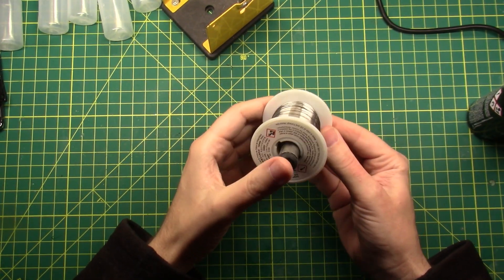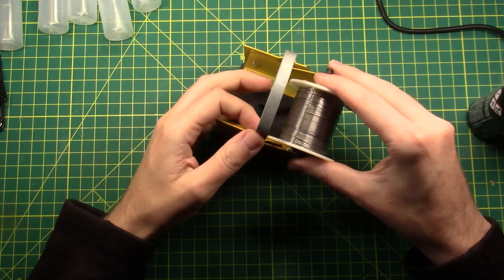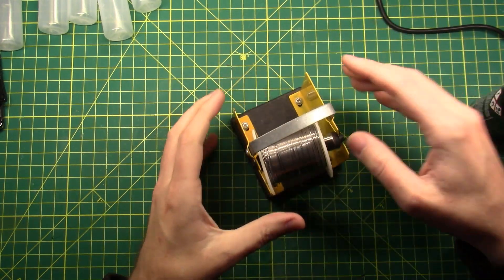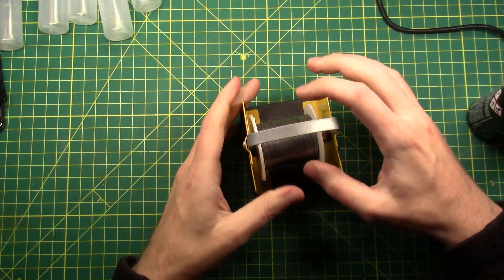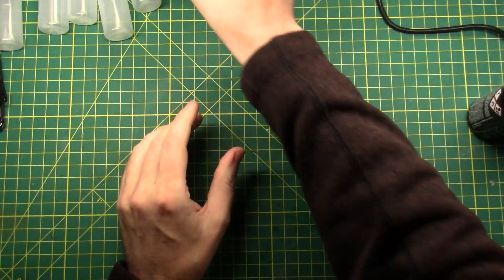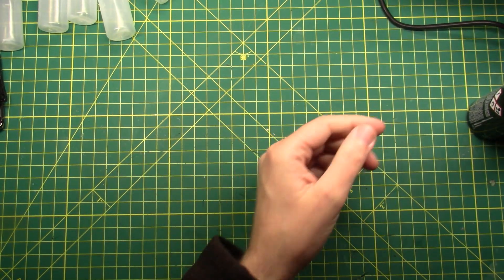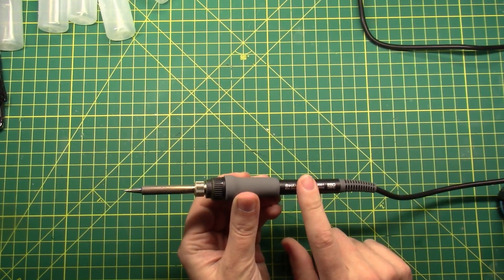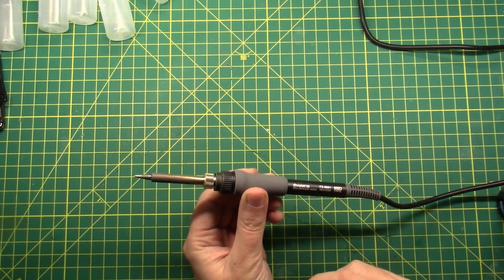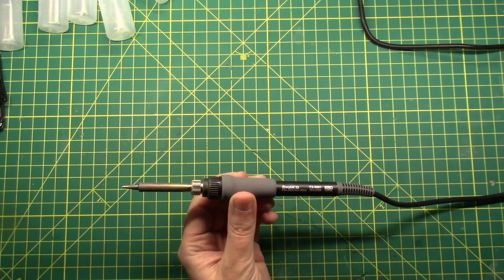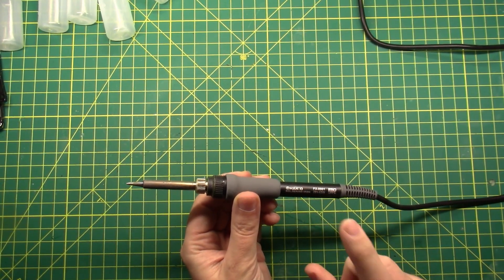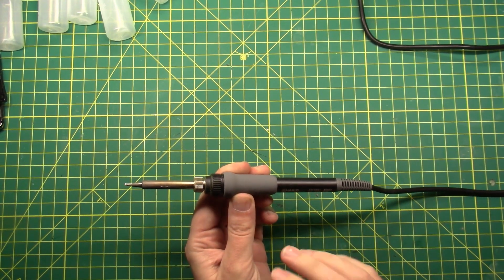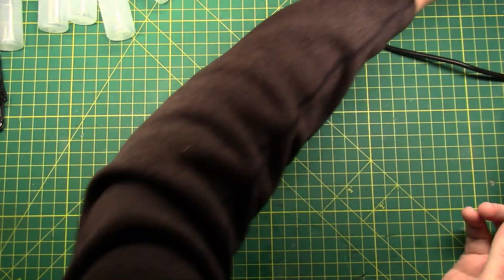It is 44 rosin core, Kester 44 rosin core. This is leaded solder, the 60-40 or whatever. The link's in the description below. Use yourself some good quality solder, that's going to make a big difference. Number two, use a good quality iron. This is the Hakko FX888D.